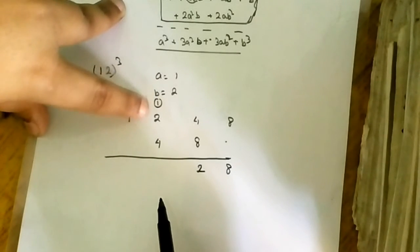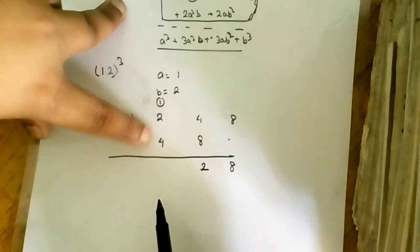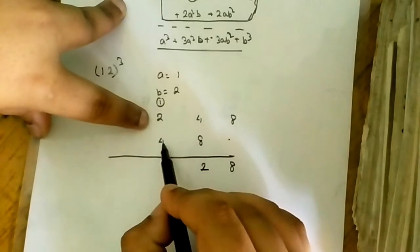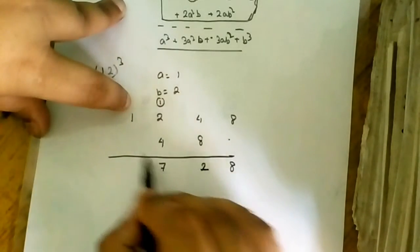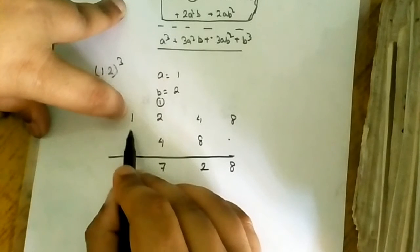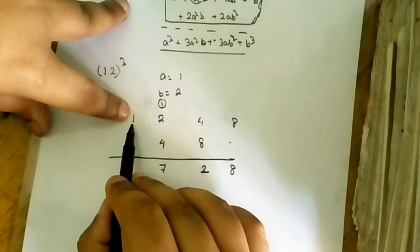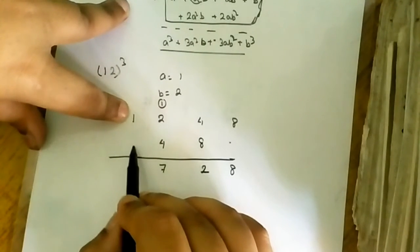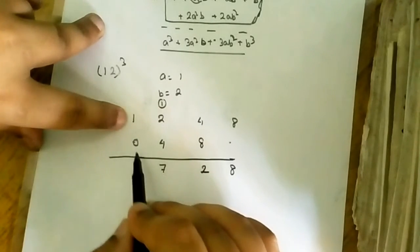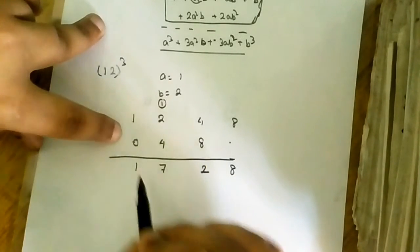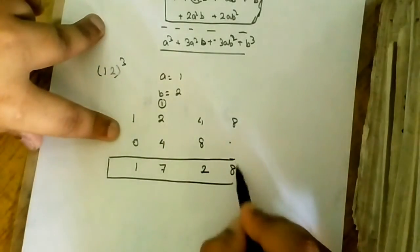with these two numbers 2 and 4. The result will be 2 plus 4 is equal to 6, 6 plus 1 is equal to 7. Now 7, and now the remaining is 1 but below 1 there is no number. That means I will assume that there is a 0. That means 1 plus 0 is equal to 1. This is the very good answer.